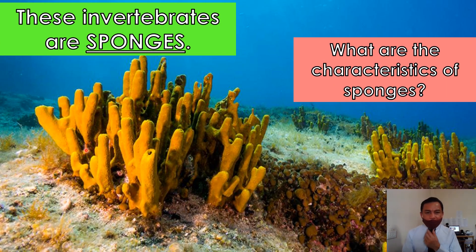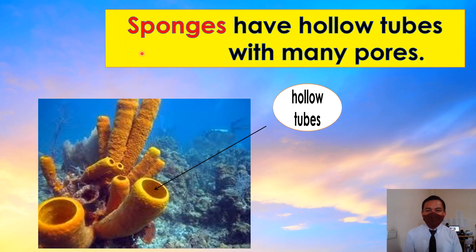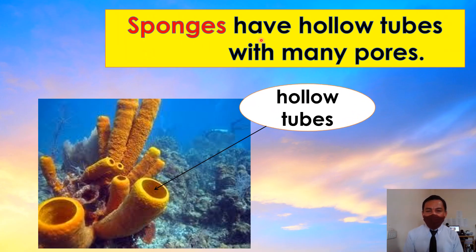Look at the picture. These invertebrates are sponges. What are the characteristics of sponges? Sponges have hollow tubes with many pores. Look at the picture — these are hollow tubes.